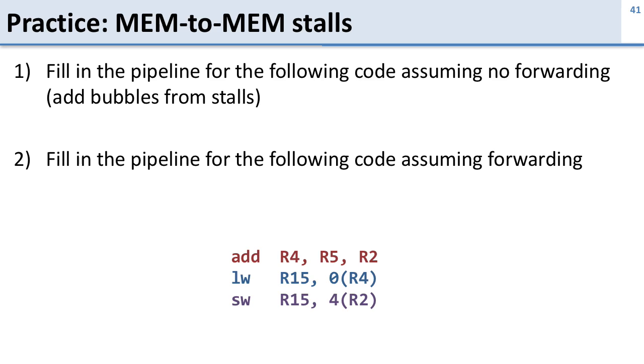Let's practice looking at some stalls between memory operations. We're going to do this in two parts: fill in the pipeline for the following code assuming that we have no forwarding (you can go ahead and add in the bubbles or stalls), and then fill in the pipeline for the code assuming that we have forwarding and let's see if we can do a better job.